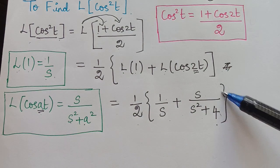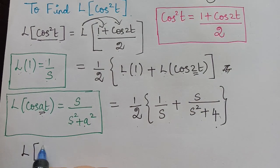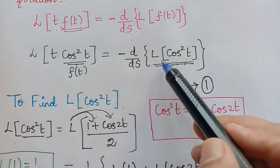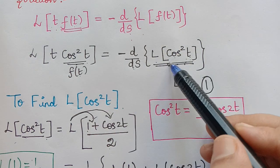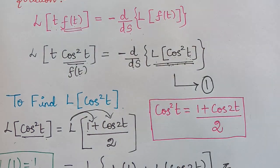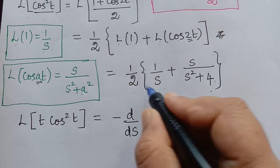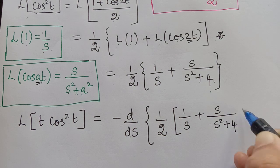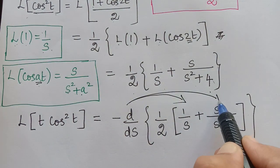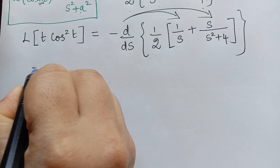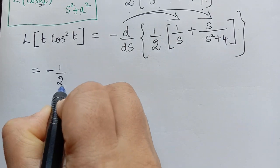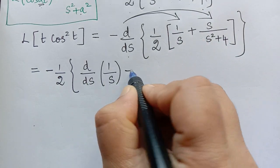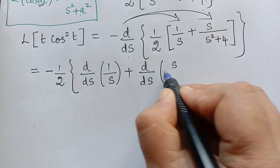So we get L{t·cos²t} equal to, from equation 1, negative d/ds of L{cos²t}. Substituting what we found: negative d/ds of (1/2) · [1/s + s/(s² + 4)]. Now we can differentiate each of the functions separately. The constant 1/2 can be taken out, so we will have negative 1/2, and within the bracket: differentiation of 1/s plus differentiation of s/(s² + 4).